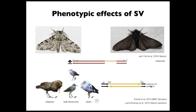As an evolutionary biologist, I'm particularly interested in the effects of structural variation on the phenotype of an organism, mainly because the phenotype is where selection can act upon. I've put some examples from evolutionary biology here. The first is the textbook example for adaptation: a butterfly called the peppered moth. During the Industrial Revolution in the UK, trees got all black, and suddenly butterflies with the black morph were at an advantage over the pale morph.